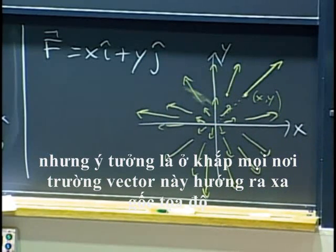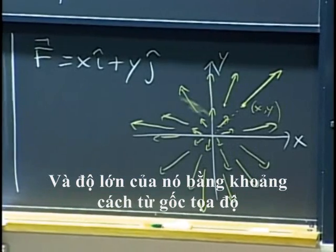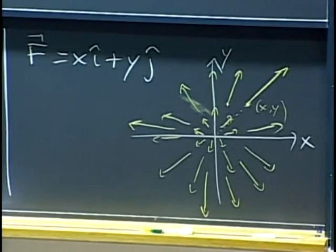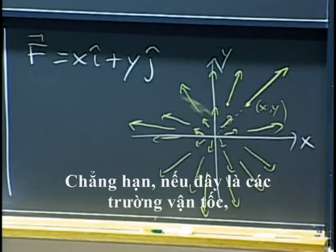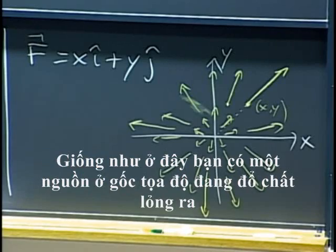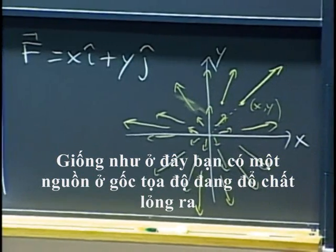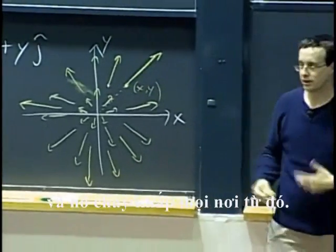So, the idea is this vector field everywhere points away from the origin, and its magnitude is equal to the distance from the origin. If this were, for example, velocity fields, well, that would tell you, you would see visually what is happening to your fluid. Like here, maybe you have a source at the origin that is peering fluid out and it is flowing all the way away from that.